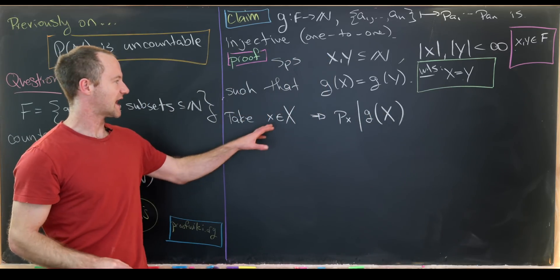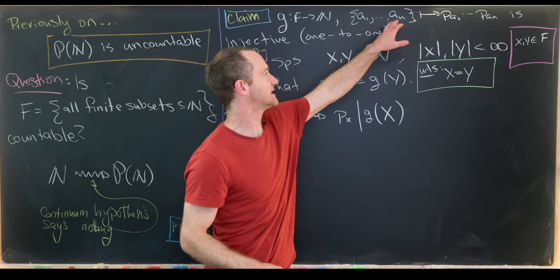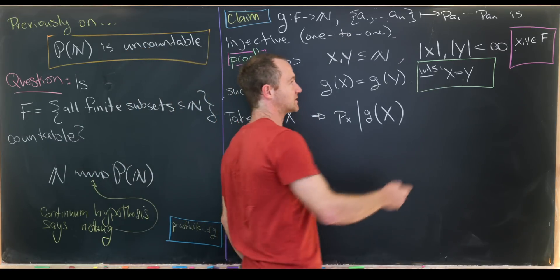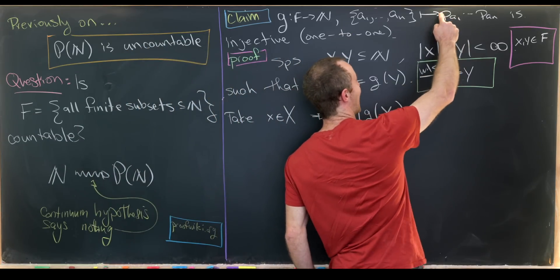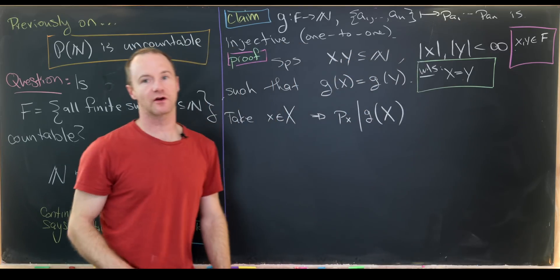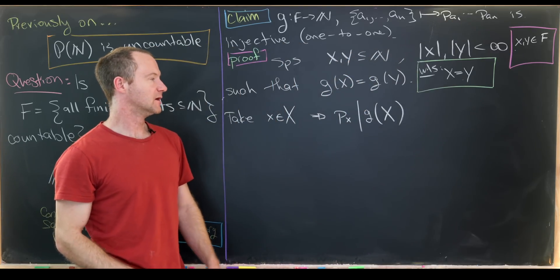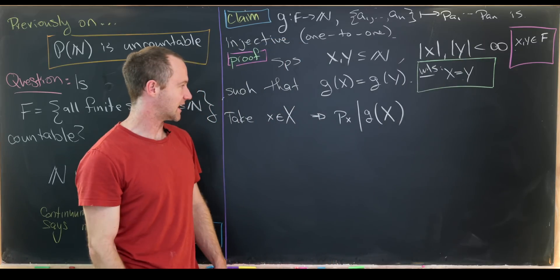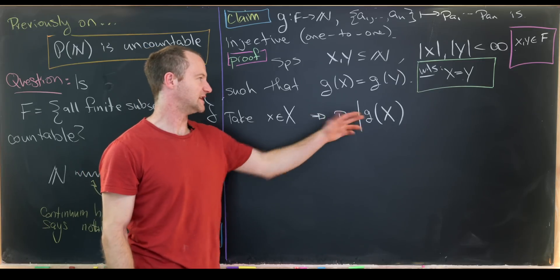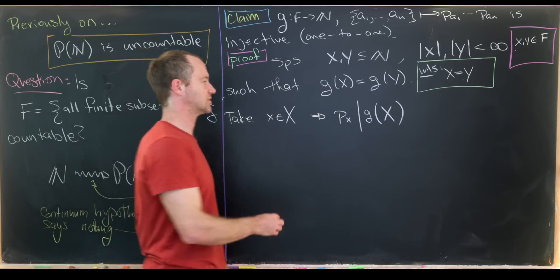Why is that? If x is in the set X, then it's one of the members, which means the x-th prime number is one of the factors on the right-hand side. That being a factor means it divides the product - it divides the output of this function.